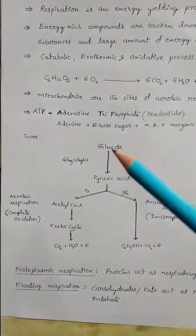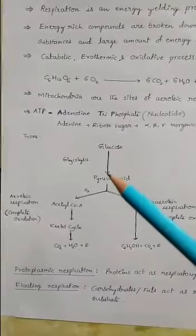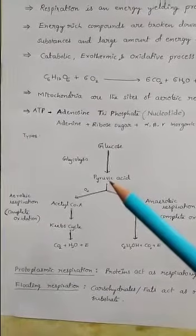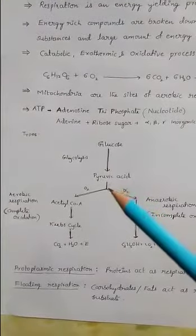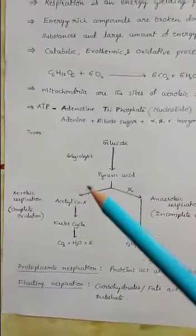In glycolysis, glucose is converted into two molecules of pyruvic acid. Next, further reactions depending on the availability of oxygen.